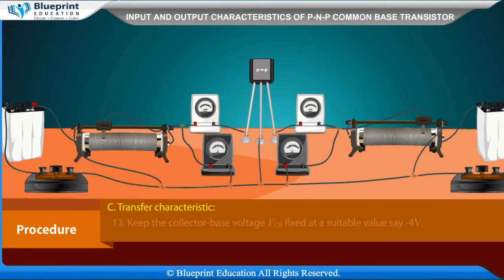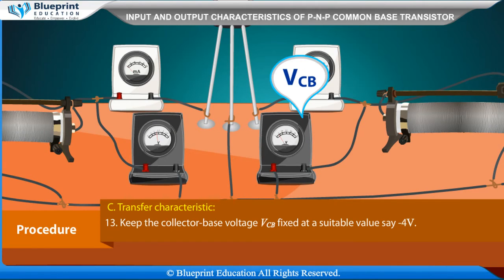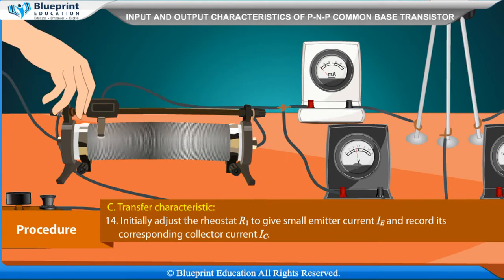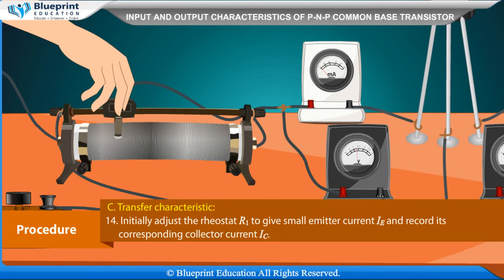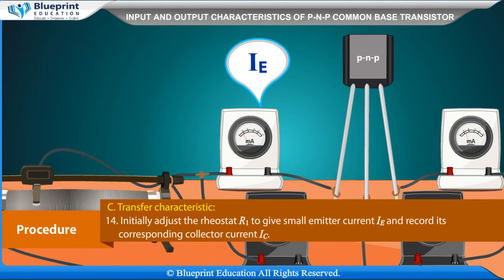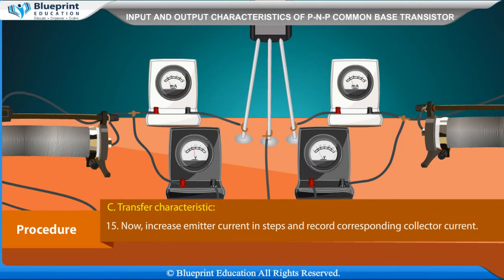Transfer Characteristics: Keep the collector-base voltage VCB fixed at a suitable value, say minus 4 V. Initially adjust rheostat R1 to give small emitter current IE and record its corresponding collector current IC. Now increase emitter current in steps and record the corresponding collector current.